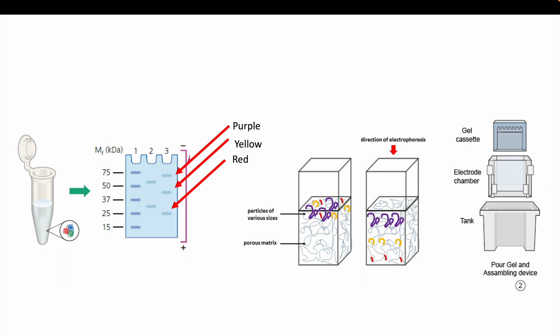Once you have added the protein into the wells, it typically is added into a device similar to the one shown at the far right corner. Where the tank contains buffer, the electrode chamber holds the gel cassette so that the electricity can be added, and that will be shown in the next step.